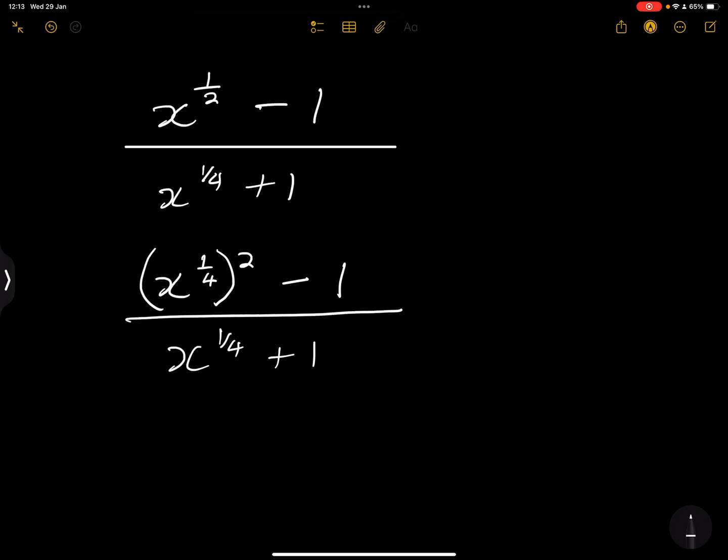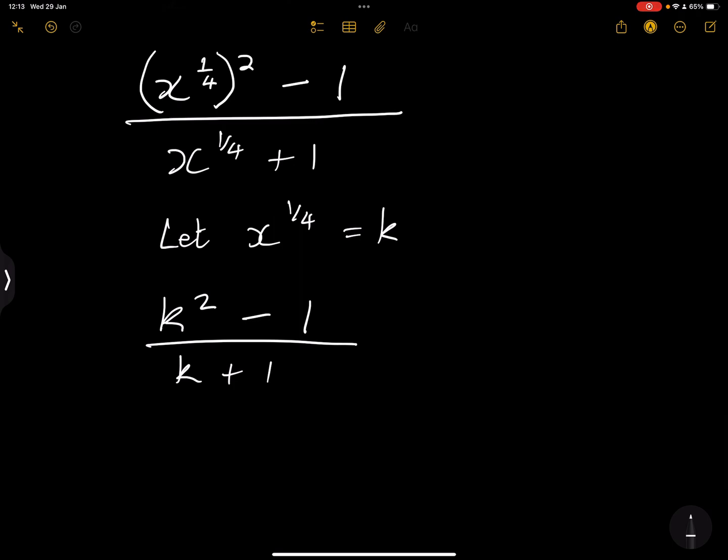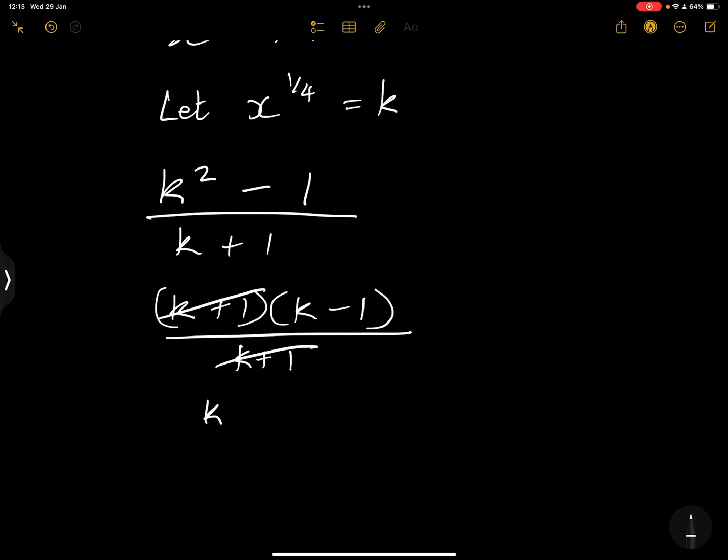And so that becomes K squared minus 1 divided by K plus 1. Of course, once again, you've got the difference of two squares. That's K plus 1, K minus 1, and this is divided by K plus 1. So we can cancel those out, and that gives me K minus 1.